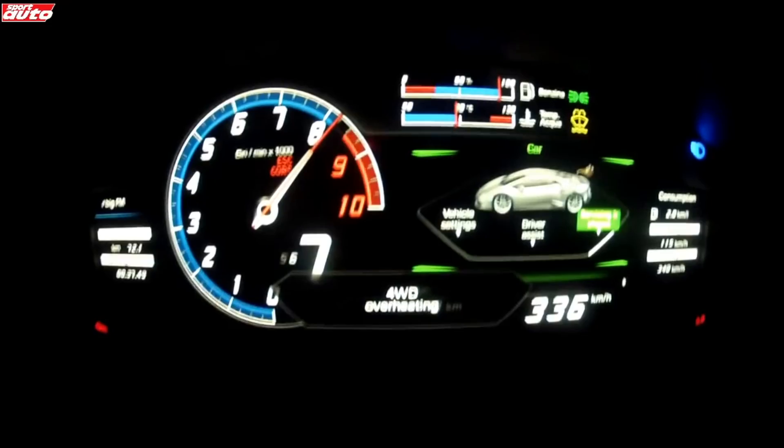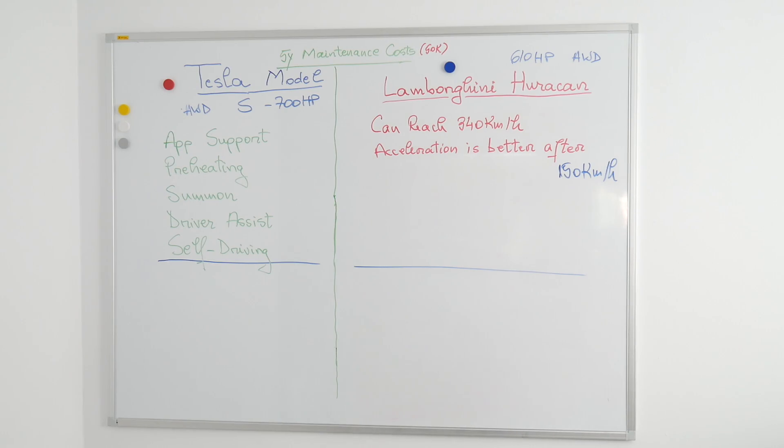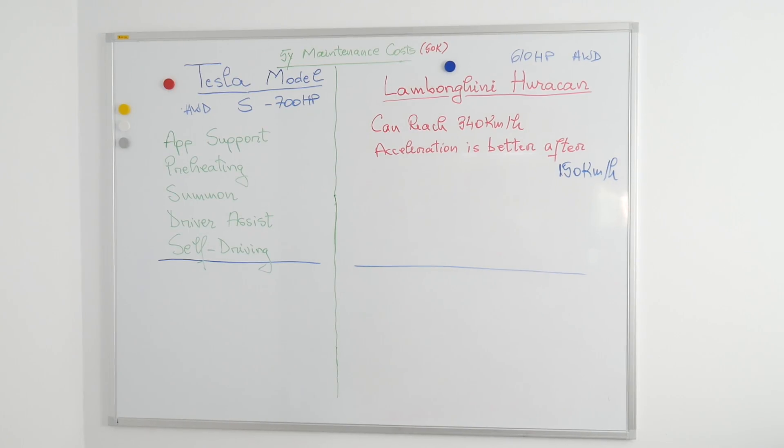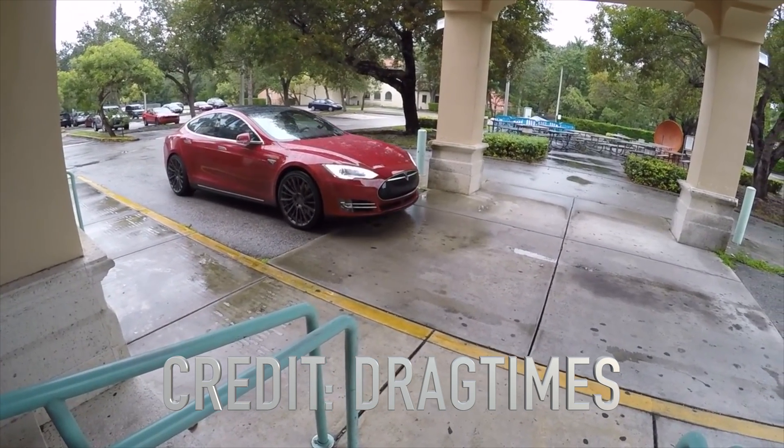Now, I have to admit, you can't reach 340 kilometers per hour in a Tesla like you can in a Huracan, and also after 150 kilometers per hour, the Lambo takes the lead, but you can't summon your Huracan to pick you up, so I think Lambo loses overall.